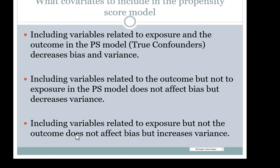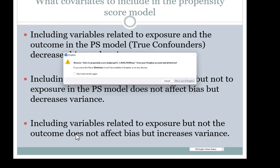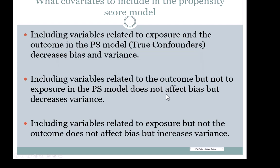Besides true confounders, there are variables that are only related to the outcome. Ignoring them doesn't lead to bias; however, if you have variables that are strongly related to the outcome, it is important to include them because including them reduces variance, which increases your power. For example, a pre-test variable may not be a true confounder, but including a pre-test will increase power.